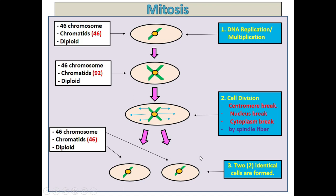Note that in cell division, the nucleus breaks first and then the cytoplasm. So the sequence is: nucleus divides, then cytoplasm divides. That is mitosis — new cells are identical to the parent cell, and two new cells are formed from one cell.